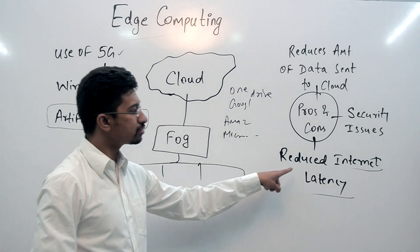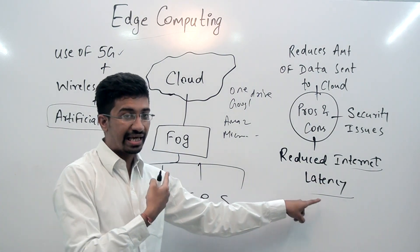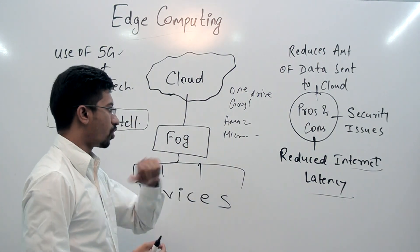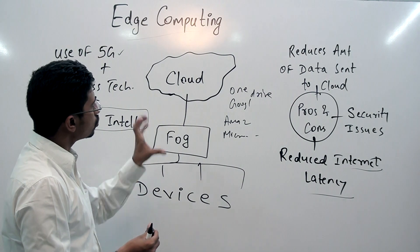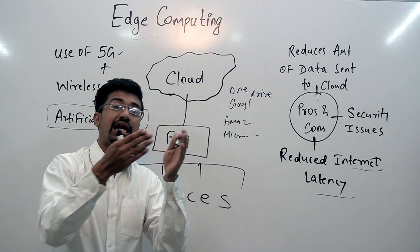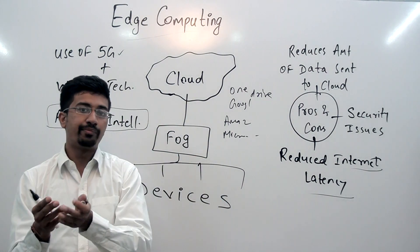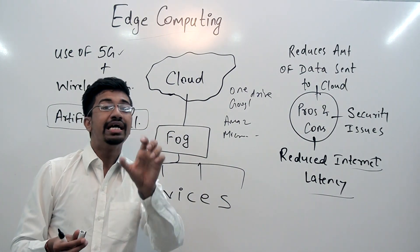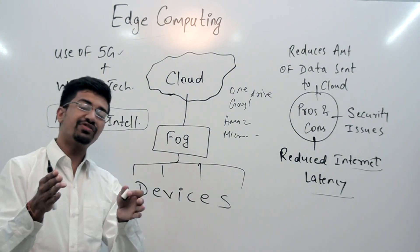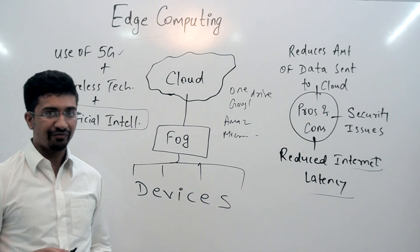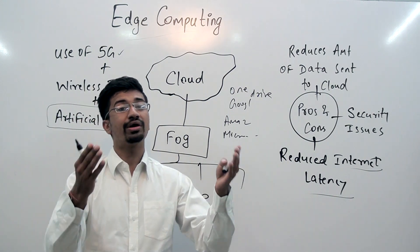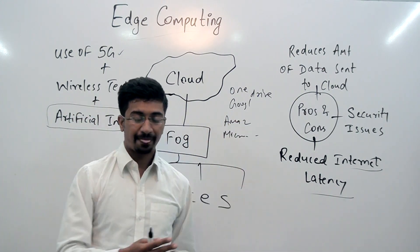So friends, this is edge computing — also called fog computing — and this is the difference between cloud computing and edge computing. Basically, what you will find is that edge computing is an advanced version of cloud computing, which we have already discussed in our separate video. I hope you have had a good lecture and understood edge computing and the comparison between cloud computing and edge computing.